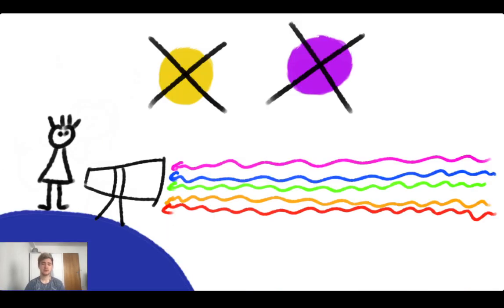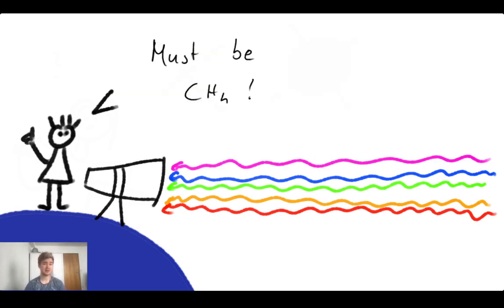And then what happens on Earth is that we can look at the light that we receive from that star, from the exoplanet, and we can notice, oh, there's no yellow light, there's no purple light, what's going on here? And the very easy possible answer to that is that there has to be methane in the atmosphere of that exoplanet that has absorbed all of that purple and yellow light.